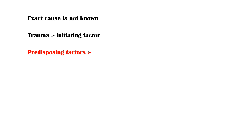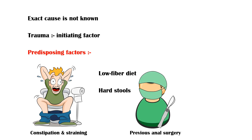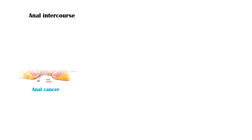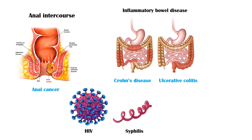The exact cause of anal fissures is not known. However, the initiating factor is trauma to the anal epithelium. Predisposing factors include constipation and straining during defecation, low-fiber diet and hard stools, previous anal surgery, childbirth, anal intercourse, anal cancer, inflammatory bowel disease including Crohn's disease and ulcerative colitis, and infections such as HIV and syphilis.